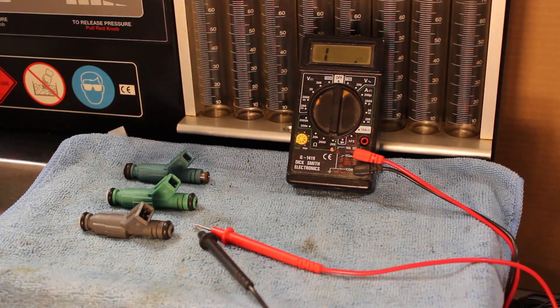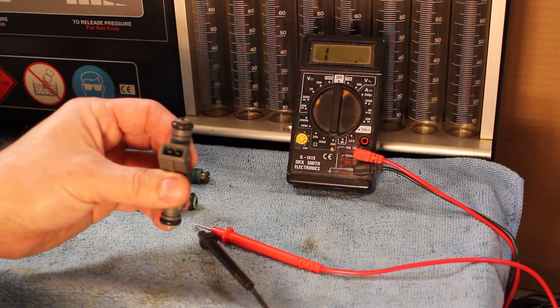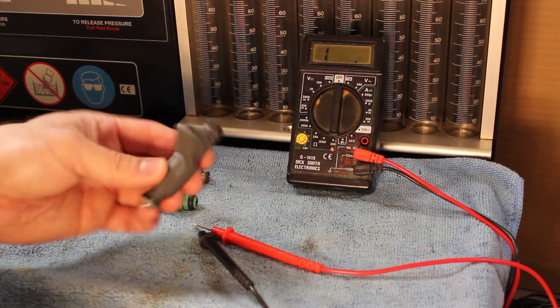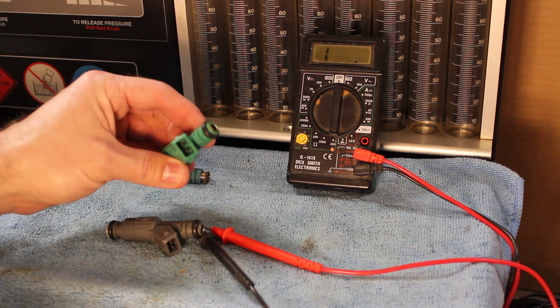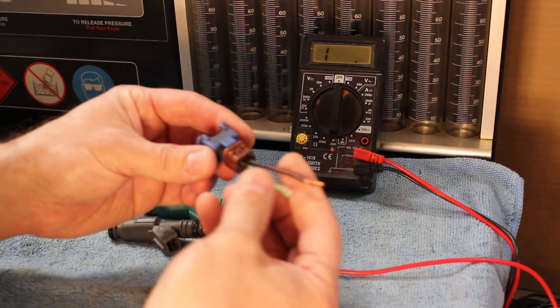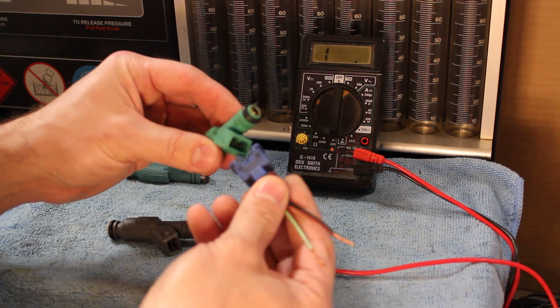Today I'm going to demonstrate how to check the ohms resistance in an injector. If the resistance is out, your injector will flow a different rate to the others, so you just want to check that they've all got the same rate. I've got an old plug and I cut the wires to make it a lot easier. You just plug that on.